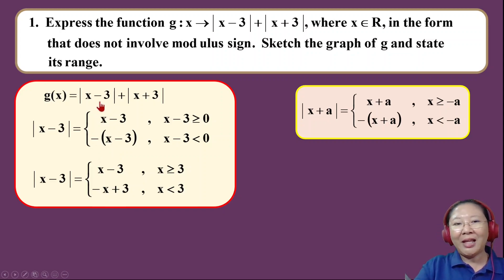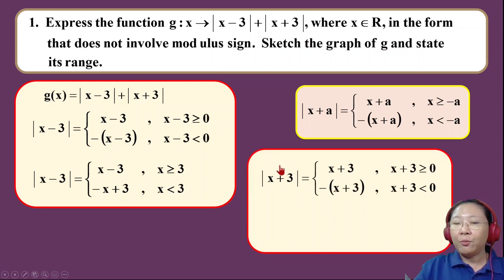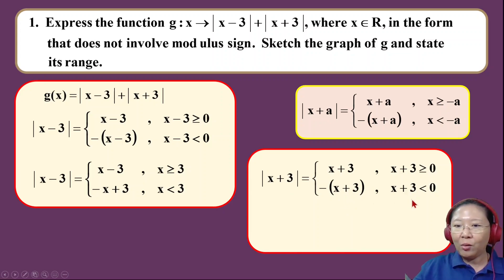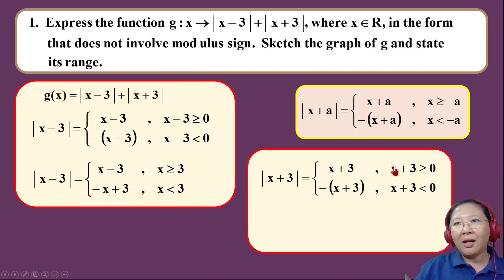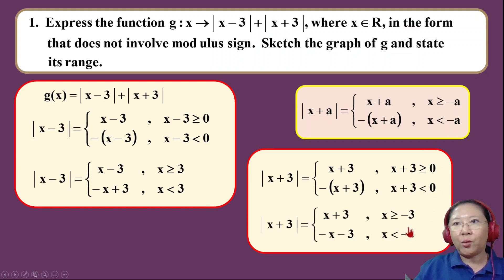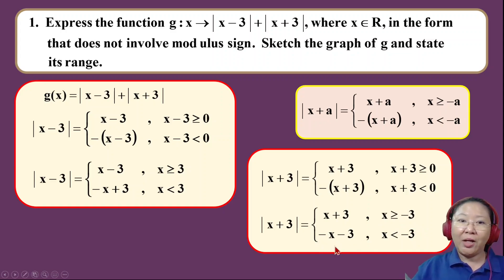Once I'm done with |x − 3|, I do the same for the second modulus expression, |x + 3|. I copy x + 3 into the formula — one case is negative and one is positive, with the positive case using the equals-to symbol. I multiply the negative through, and on the right-hand side I move the plus 3 across so it becomes x > −3. Remember, just moving a number doesn't change the inequality, so x > −3 stays as is.